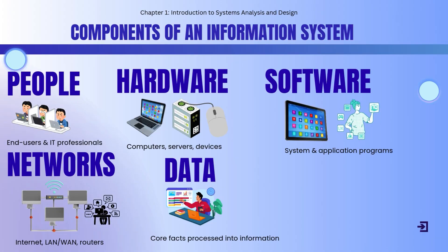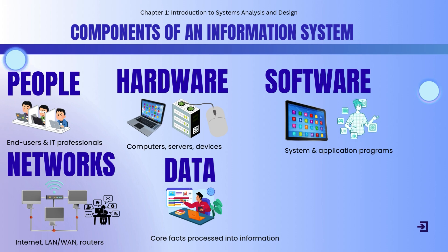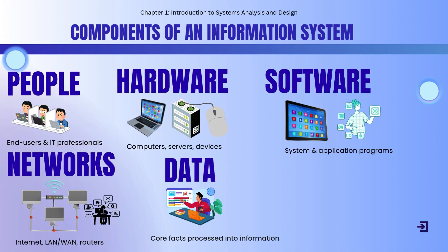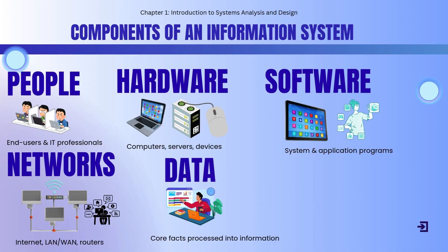The components of an Information System. An Information System has five main components. People — these are both end-users and IT professionals. Hardware — like computers and servers. Software — these are programs and applications. Networks — such as the internet or local area networks. And finally, data — these are the raw facts that become useful information. All of these must work together to make an Information System effective.